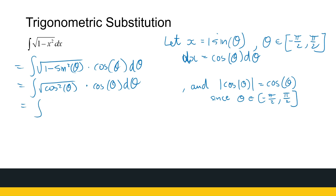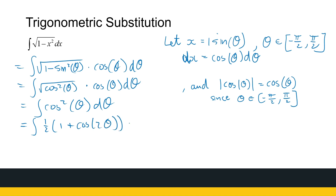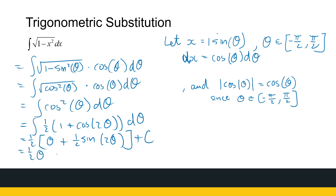So this becomes the integral of cos theta times cos theta, giving us cos squared theta d theta. We've reduced it to something familiar. Using the double angle formula identity from the section on trigonometric integrals, cos squared theta equals one half times 1 plus cos 2 theta. Integrating that gives us one half times theta plus one half sine 2 theta, which is one half theta plus one quarter sine 2 theta plus c.